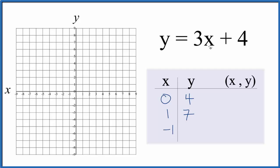So three times negative one, that's negative three, plus four gives us one. So these are the points that we'll graph for the equation y equals 3x plus 4.